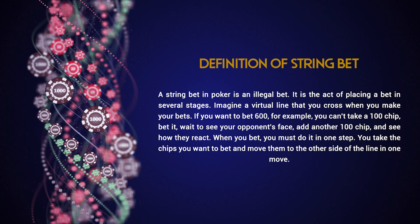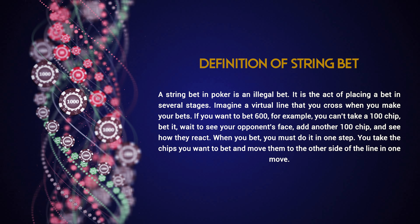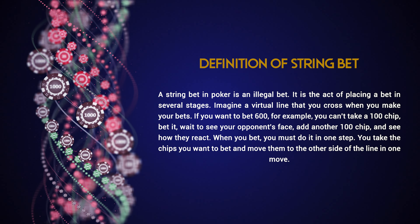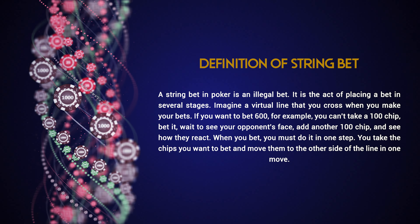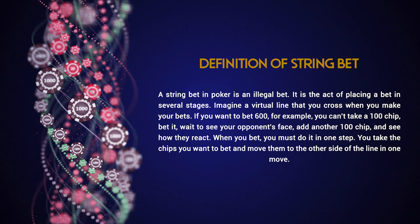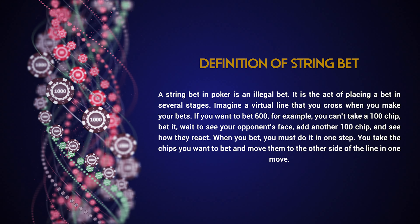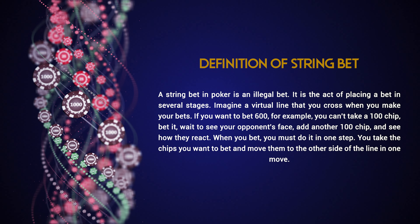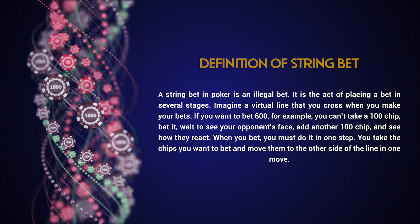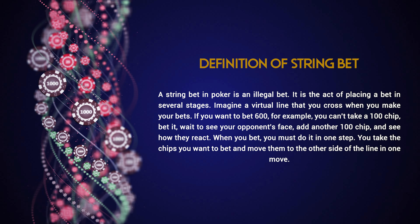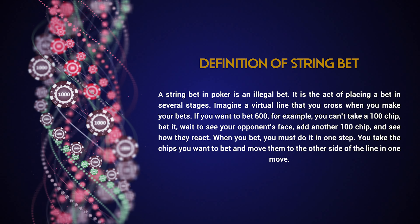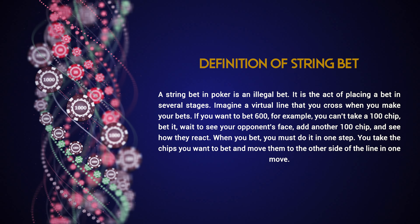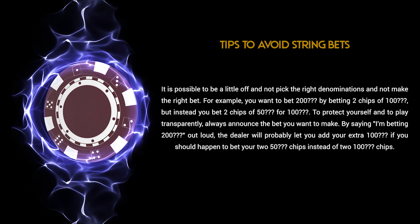Definition of string bet: a string bet in poker is an illegal bet — it is the act of placing a bet in several stages. Imagine a virtual line that you cross when you make your bets. If you want to bet 600, for example, you can't place a 100 chip bet, wait to see your opponent's face, then add another 100 chip and see how they react. When you bet, you must do it in one step: take the chips you want to bet and move them to the other side of the line in one move.